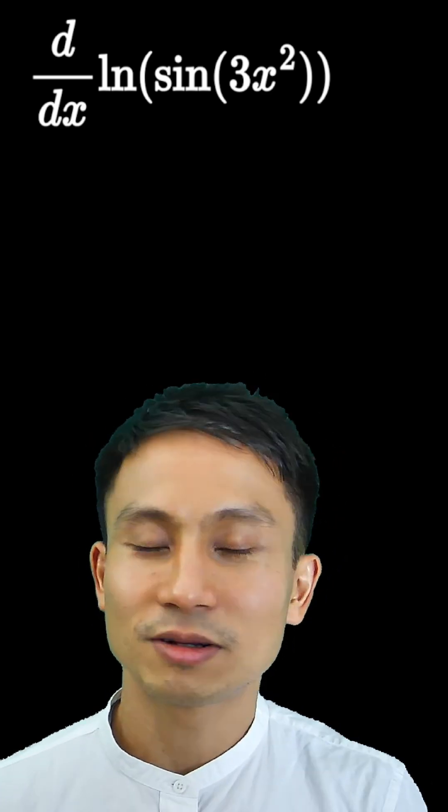So you have the outermost function being ln, and you probably realized already that this should be a chain rule. We have the first layer being the log function, the next one is sine, the next one is polynomial.